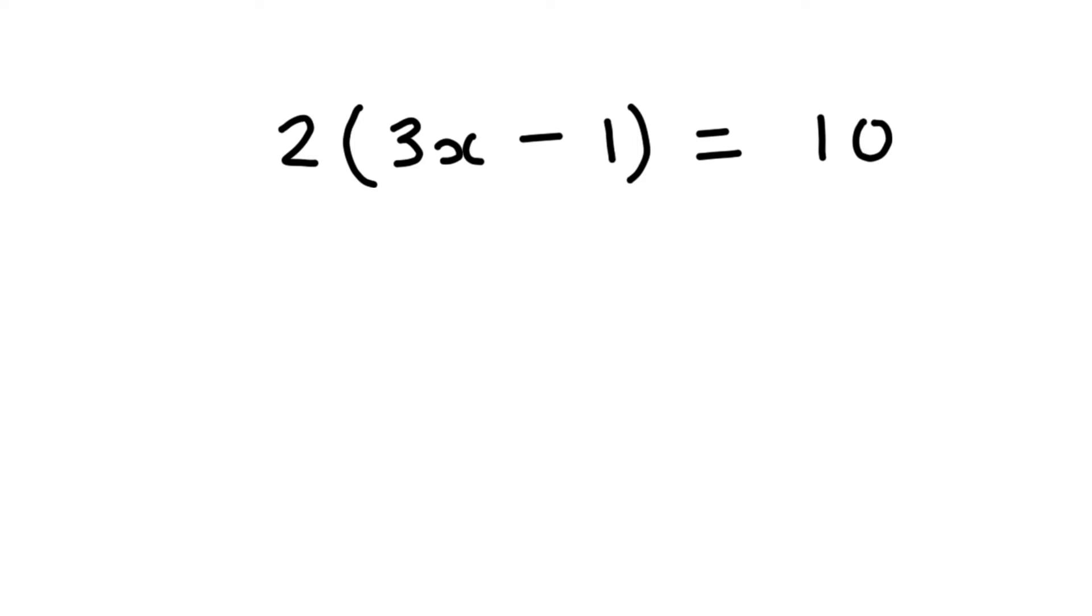And there's kind of two different ways you can solve these depending on the situation. So the first way is using distribution or distributive method. Since this is a 2 that's going to be multiplied, it's actually going to be multiplied to everything inside the bracket. So not only does 2 get multiplied by the 3x, but the 2 also gets multiplied by the minus 1. So it's kind of like you're sharing that 2 with everything inside the brackets by multiplying.